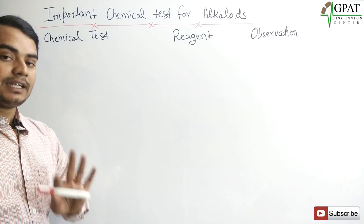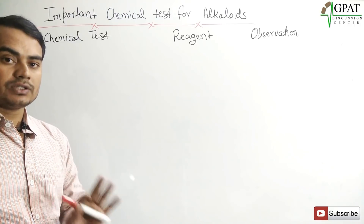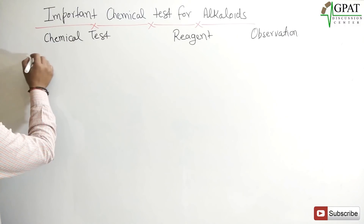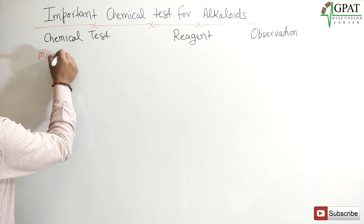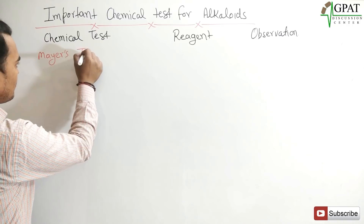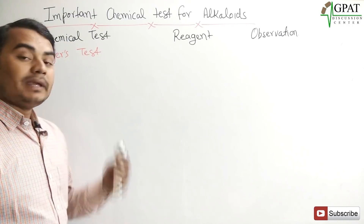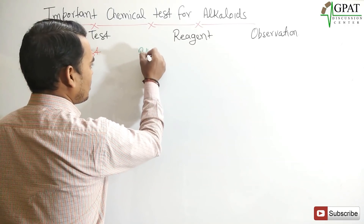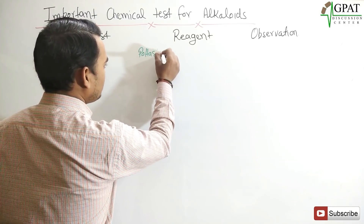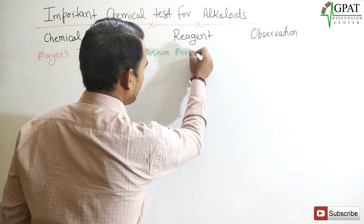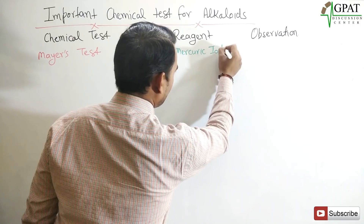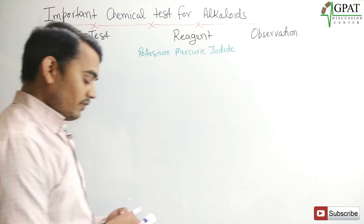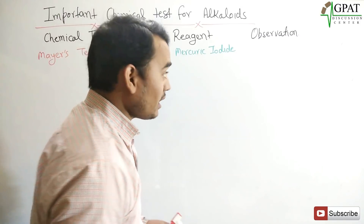So, four basic tests for the identification of alkaloids — I will take them one by one. The first test is Mayer's test. In Mayer's test, the reagent used is potassium mercuric iodide. In the observation, we find a creamy precipitate.